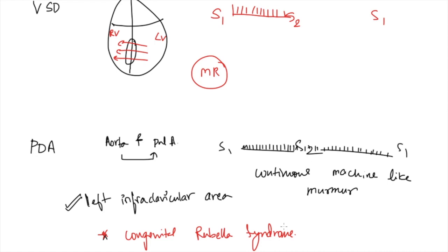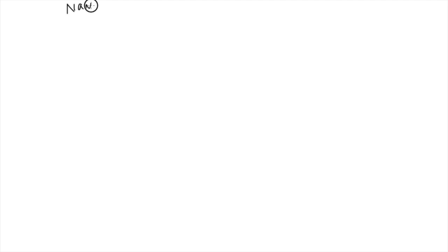Other causes of continuous or machine-like murmur include venous hum and arteriovenous fistula connections. A useful cheat code: any named murmur is usually diastolic. You still need to understand the mechanism of each murmur, but if you blank out in an exam, remember that named murmurs are diastolic.